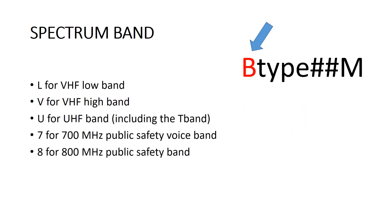The spectrum band identifier is a single alpha or numeric character to designate the public safety spectrum the channel is found within. They are: L for VHF low-band channels, V for VHF high-band channels, U for UHF channels including the T-band channels, the number 7 for the 700 megahertz public safety band, and 8 for the 800 megahertz band.